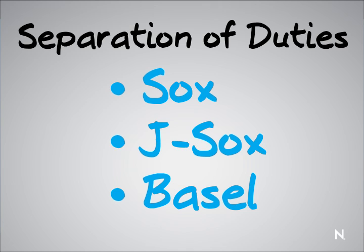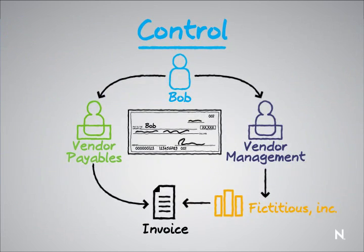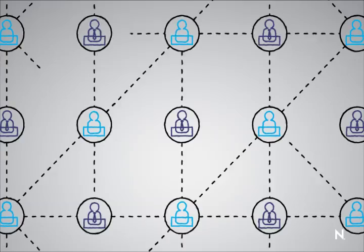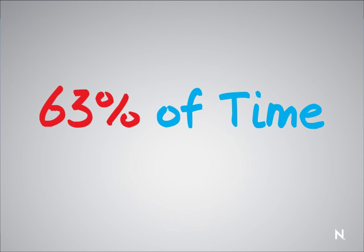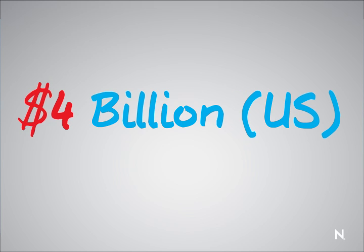Now, to understand why that's such a big deal — because it doesn't seem that big of a deal in this simple example — it's that when you get into the real mechanics of all these different roles with all these different people and tasks, this becomes an enormous problem. It becomes a very unmanageable series of roles and assignments and associations. In fact, one particular analyst firm estimated that companies spend about 63% of their time dealing with that one issue, and that it costs most companies across the globe over four billion dollars U.S. to manage the simple separation of duties for the U.S. SOCs regulations. That's a lot of money to be spending just to manage these separation of duties.